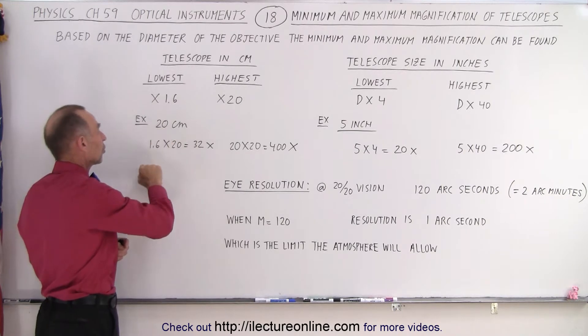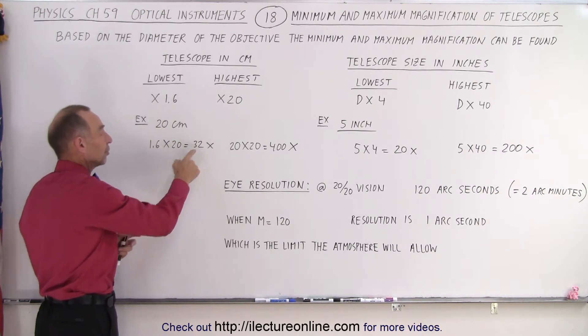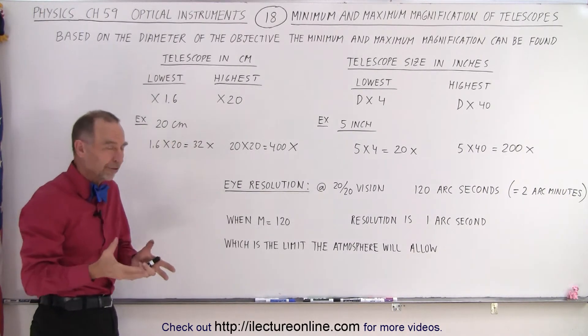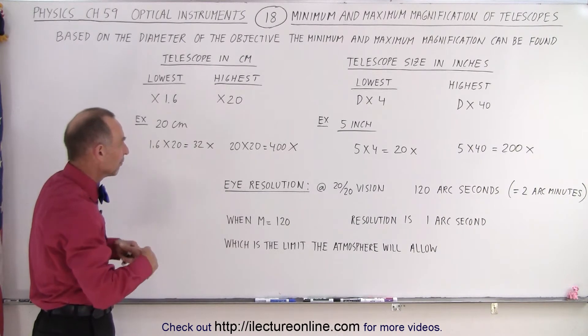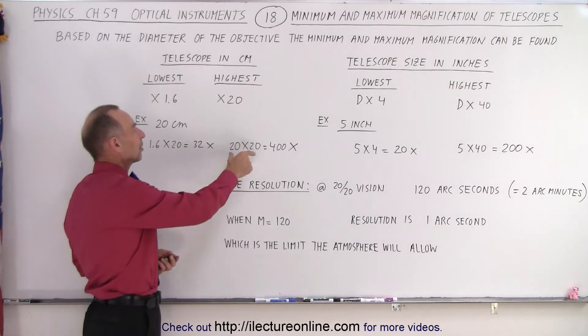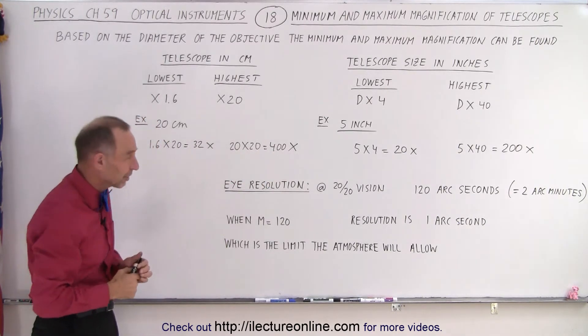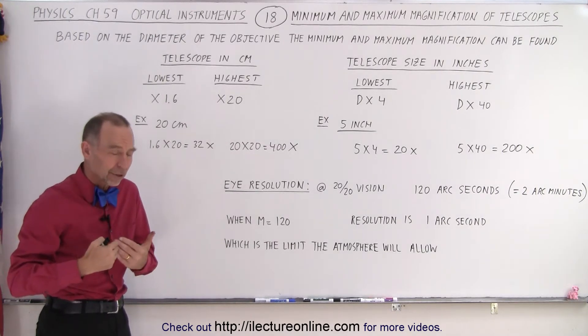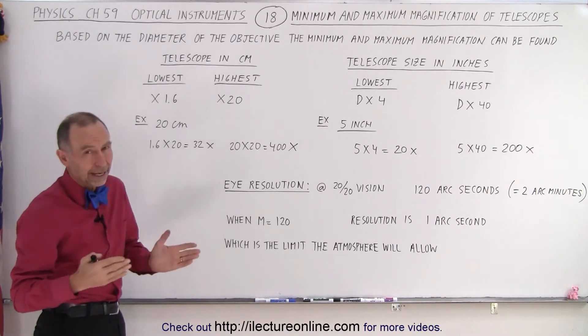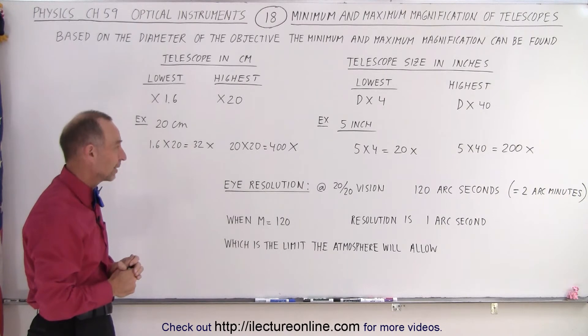So for a 20 centimeter telescope, 1.6 times 20 is 32x which is essentially the lowest effective setting of that telescope for magnification. And at the highest range, 20 times 20 would be 400. That would be the largest magnification you're trying to squeeze out of your telescope, or again it becomes less effective. You don't get a lot of light coming through, field of view is very narrow, and you wouldn't get much out of your telescope at that point.